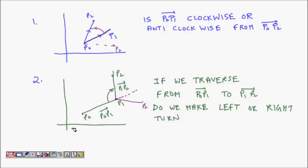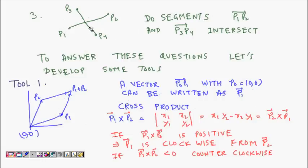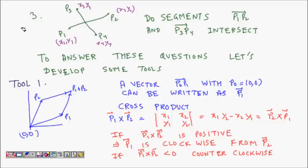The third question: you are given two line segments. The first has coordinates p1 (x1, y1) and p2 (x2, y2); the second has p3 (x3, y3) and p4 (x4, y4). You have to find whether they intersect. The first two questions will be answered in this lecture, and the third will be covered in the next lecture.